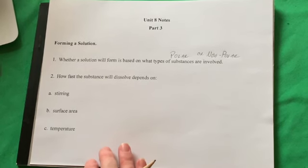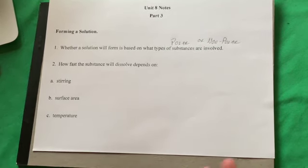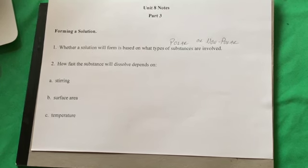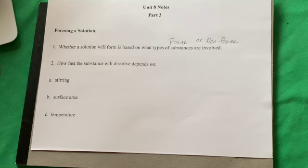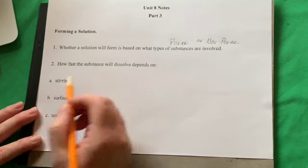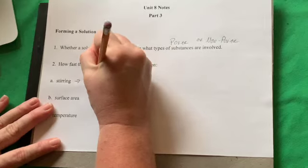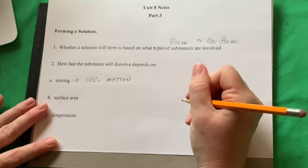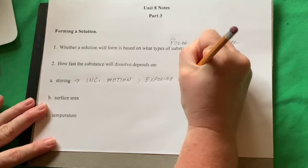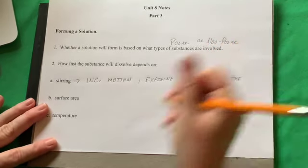Once you know a solution will form, the next question is how fast you can get it to happen. We've all had experience with powdered drinks like lemonade or Gatorade. The things we do to get the solute to dissolve into the solvent mostly involve speeding particles up and exposing solute particles to solvent particles. Stirring increases motion and exposes more solute particles to the solvent.